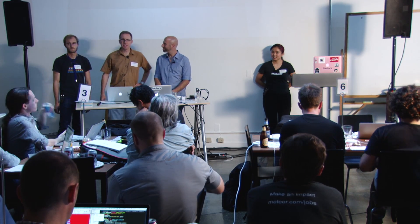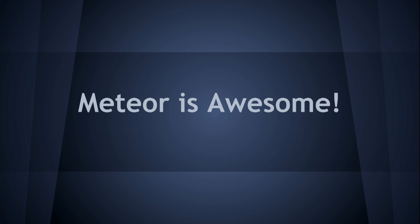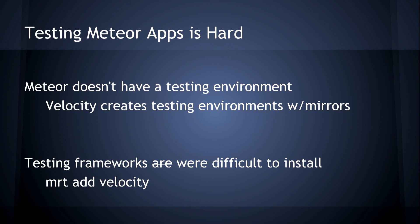Meteor makes it really easy to build interesting, reactive, responsive apps, but it doesn't necessarily make it that easy to test them. The fundamental difficulty is that Meteor doesn't have a testing environment — you have your dev environment and you have production. So you're basically left with two choices: run tests inside a Meteor app, or outside. Running outside requires a lot of fancy stubbing of Meteor methods. Running inside means you must ensure tests don't leak into your main application.